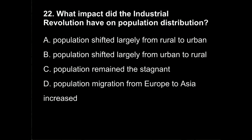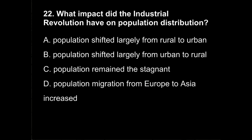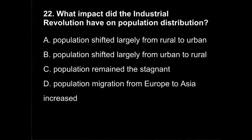Question 22. What impact did the Industrial Revolution have on population distribution — essentially, where people were living? A, population shifted largely from rural to urban or city areas? B, population shifted largely from urban to rural areas? C, population remained stagnant? Or D, population migration from Europe to Asia increased?